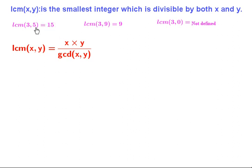Similarly, LCM of 3 and 9 is 9, because 9 is the smallest integer divisible by both 9 and 3. Now, LCM of 3 and 0 is undefined, because division of integers by zero is undefined, so we can't find an integer divisible by zero as well as 3.